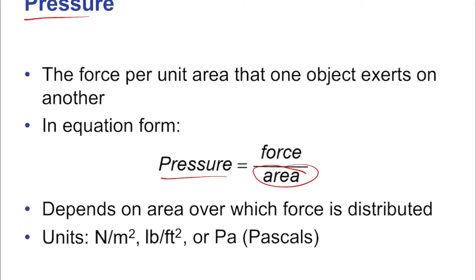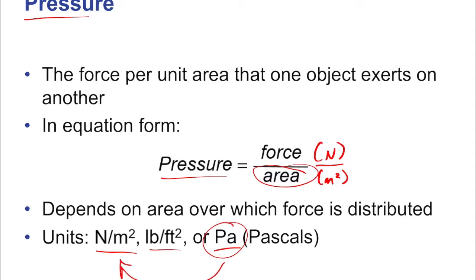Pressure depends on the area over which the force is distributed. The basic units are the Pascal, which is the Newton per square meter, since force is measured in Newtons and area in square meters. You can also express it in imperial units — pounds per square foot — but mostly we'll be talking about Pascals. The Pascal is a derived unit with a name for Newtons per square meter, just like Newtons are kilogram meters per second squared.